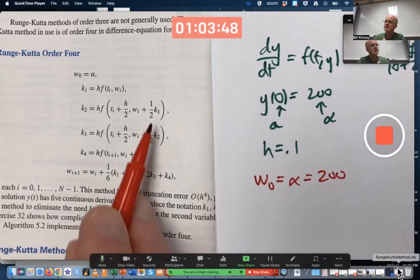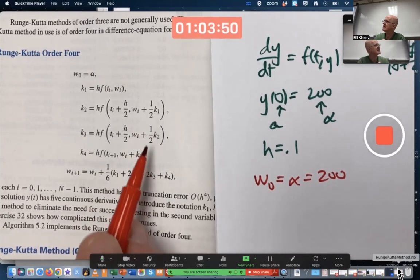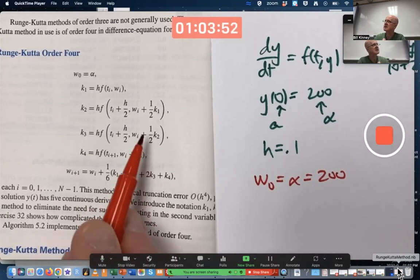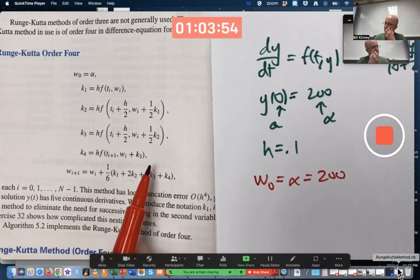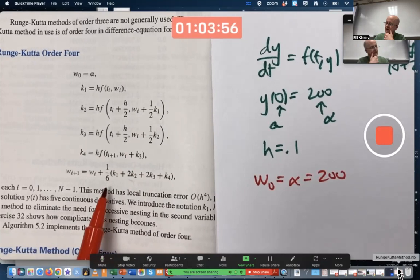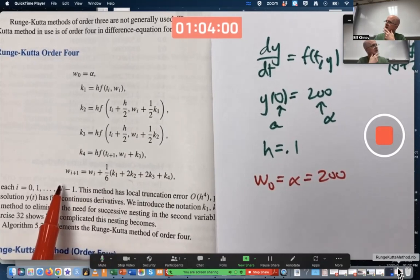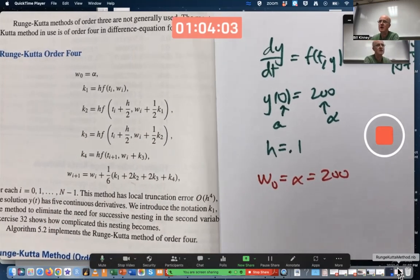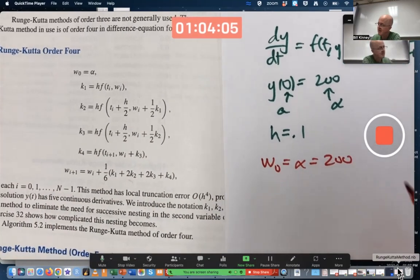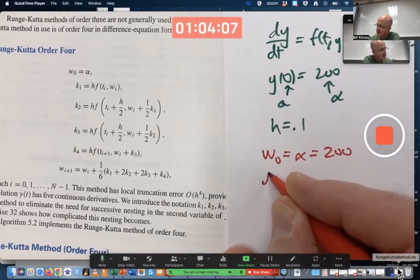A weighted average of these changes in Ys, these approximations to changes in solution values. That's getting added to the previous value of W to get the new value of W. So that's what's going on. I'll try to draw a little picture as well. Let's go ahead and compute it, though.